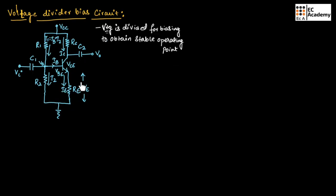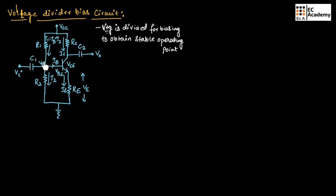This is the circuit for voltage divider biasing. Here, VCC is the biasing voltage applied across both the collector terminal and the base terminal. At the base terminal, two resistors R1 and R2 are connected, where the voltage will be divided — that is why it is known as the voltage divider bias circuit.